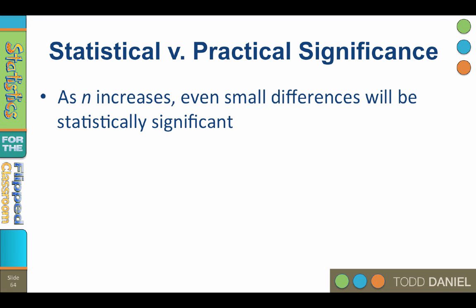Why do we need to report an effect size when we already have a statistically significant hypothesis test? The answer is the difference between statistical significance and practical significance. Because statistical significance is a function of sample size, as n increases, you will find statistical significance even for small and relatively meaningless differences.